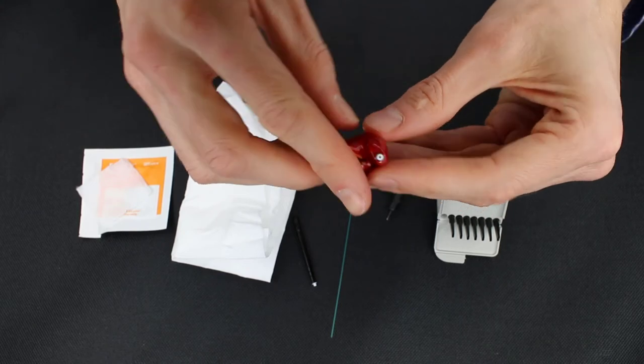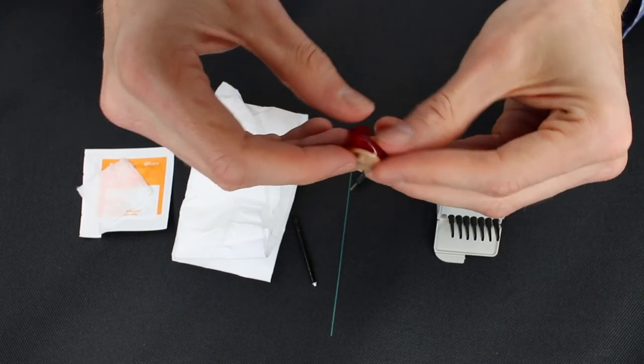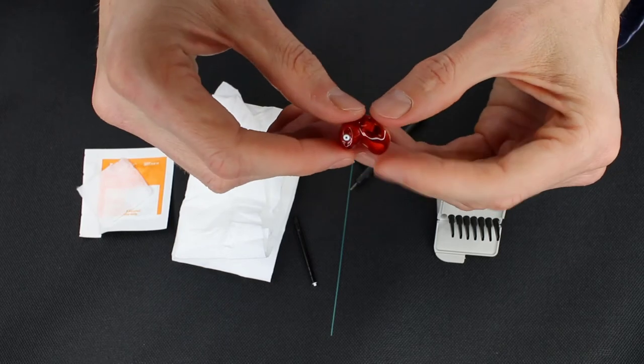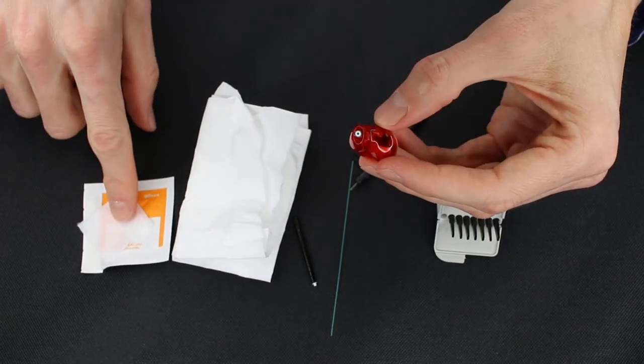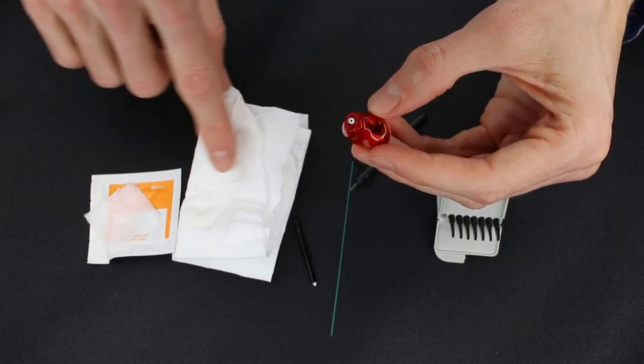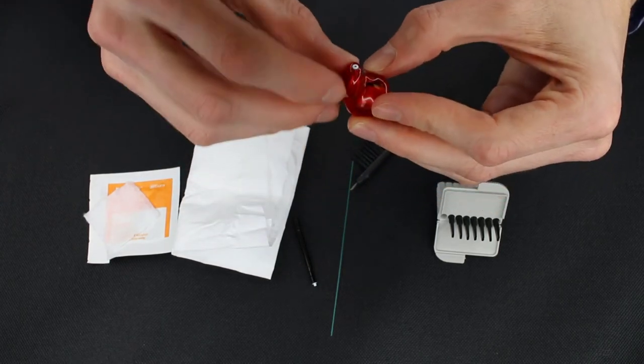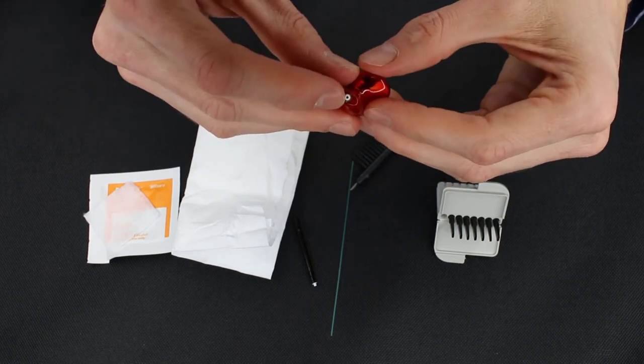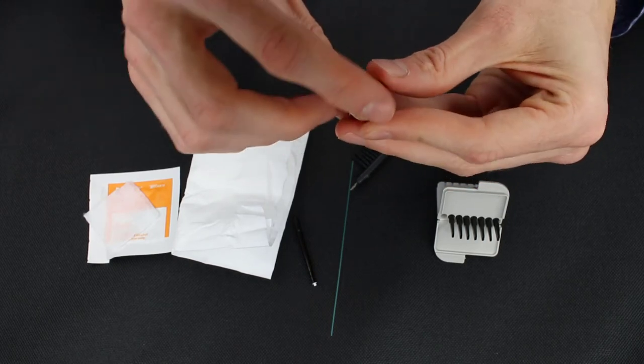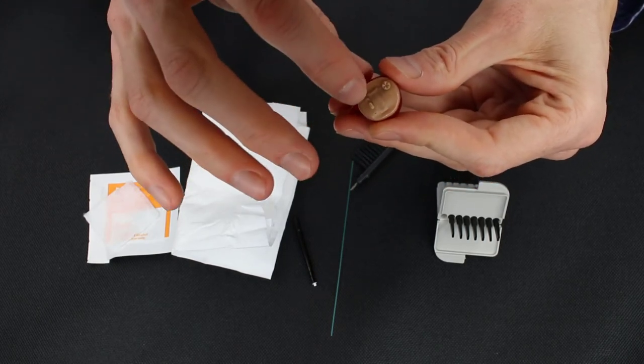When you're done with that, the hearing aid is pretty much clean at this point. We wiped it down, either with an alcohol pad or with a Kleenex. We punched the vent hole with our bore punch. We changed out the wax trap, and we brushed off the entire faceplate, including the microphone covers.